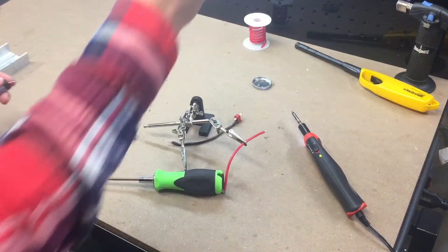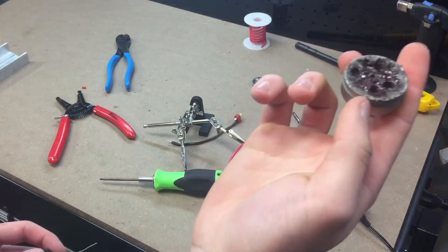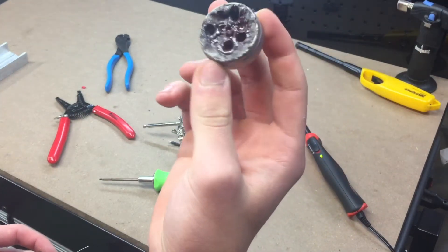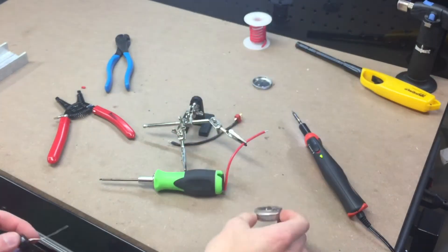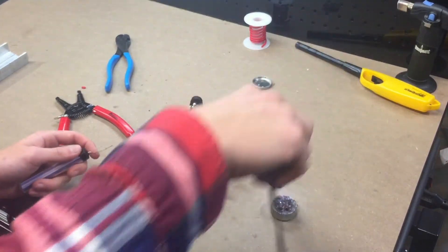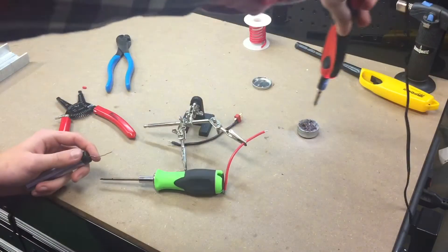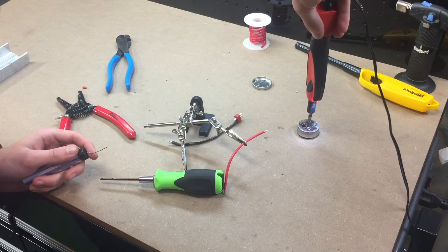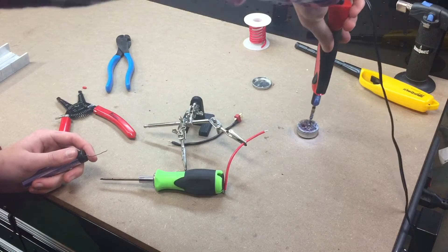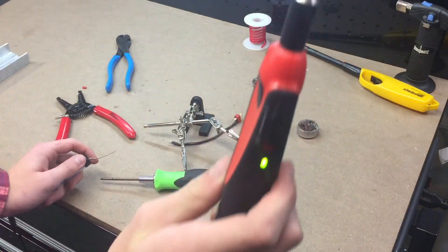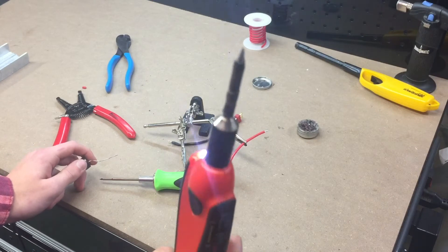And this is like tip cleaner for the soldering gun. It works pretty good and I'll show you how that works. You just dip our soldering gun and it makes the tip all nice and shiny again.